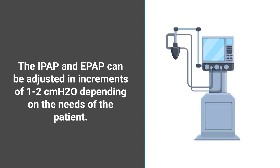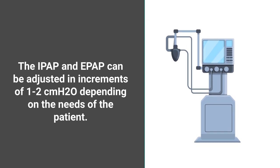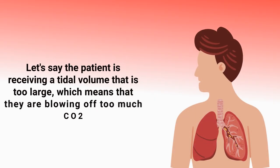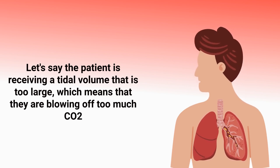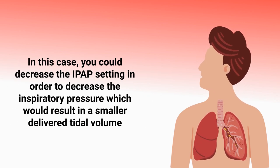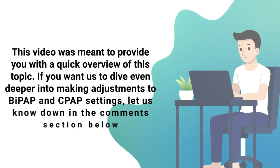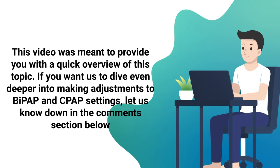The IPAP and EPAP can be adjusted in increments of 1 to 2 centimeters of water pressure depending on the needs of the patient. For example, in reverse: if the patient is receiving a tidal volume that is too large, which means they are blowing off too much CO2, in this case you could decrease the IPAP setting in order to decrease the inspiratory pressure, which would result in a smaller tidal volume being delivered.